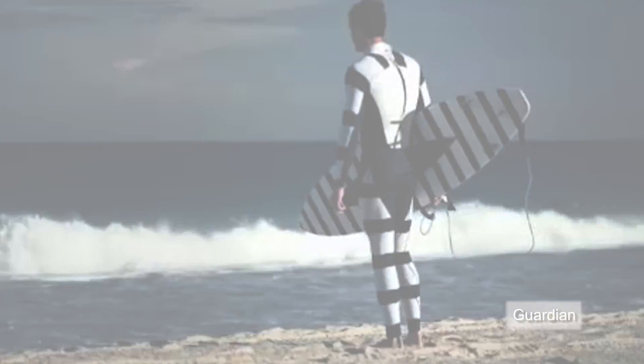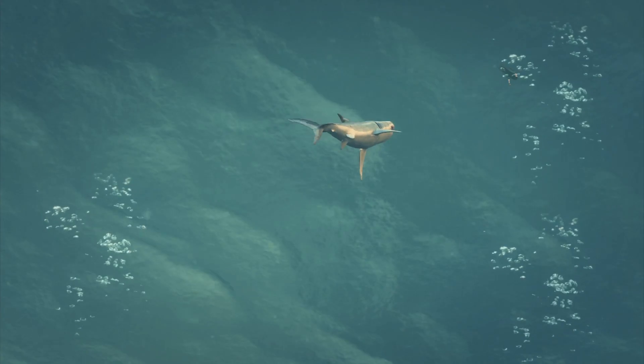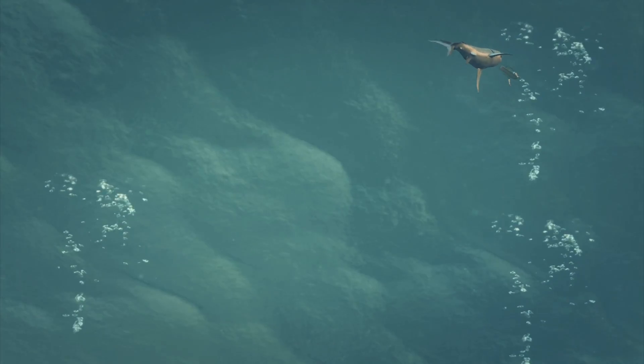An Australian firm has launched what it calls shark repellent wetsuits. The technology is based on the recent discovery that sharks are colour blind, meaning they cannot detect red or green hues in their vision.